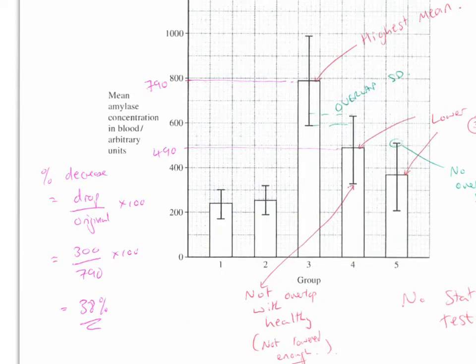Question six, the percentage decrease. So for the percentage decrease, it's drop, or the decrease divided by the original times by 100. So we've got 790, we've got 490, given as a difference of 300, divided by what we're dropping from. So we're dropping from 790 times 100 gives us a 38% decrease.